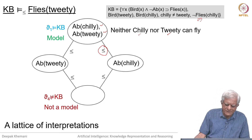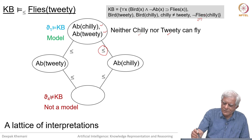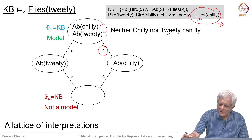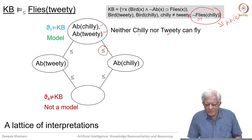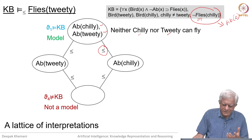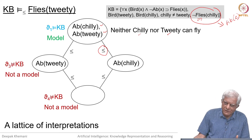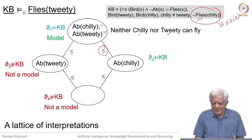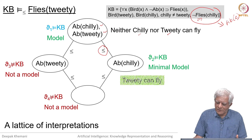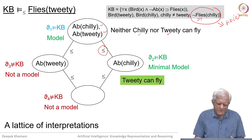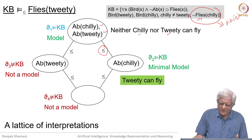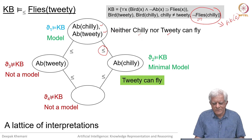The smallest interpretation is one in which neither of them is abnormal, but that is not a model because we know Chilli cannot fly, which implies abnormal Chilli — and that is not true in the empty interpretation. For the same reason, the interpretation in which only Twitty is abnormal is not a model, because Chilli should be abnormal. Finally, in the interpretation in which only Chilli is abnormal, that is a model and it is the minimal model, because there is no smaller model making the knowledge base true. In this model, Twitty can fly — so we can infer that Twitty can fly. This gives you the idea of circumscription.